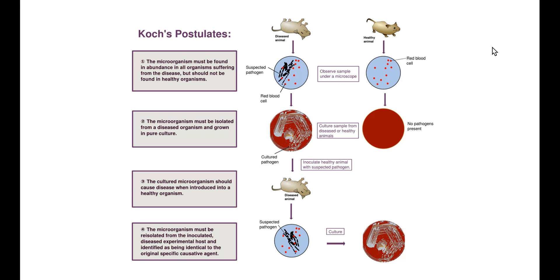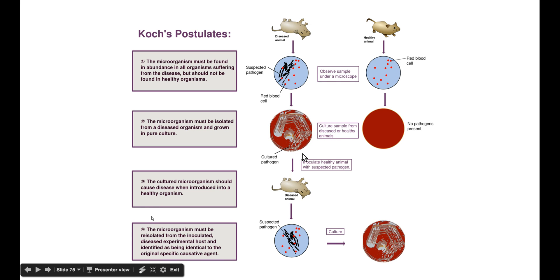This diagram shows how Koch's postulates work in practice: you take the suspected pathogen from the organism, grow it on agar in a petri dish, inject it into a healthy animal, that animal becomes sick with exactly the same symptoms as the original, and you can then remove and re-grow exactly the same pathogen on the petri dish.